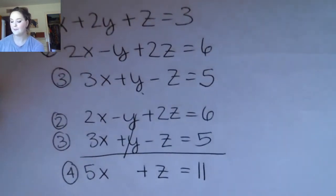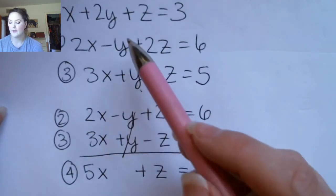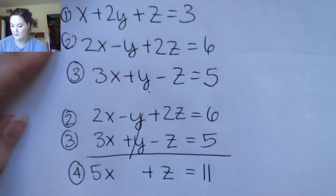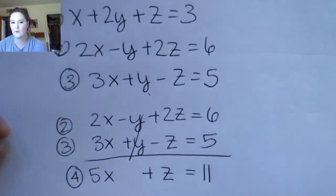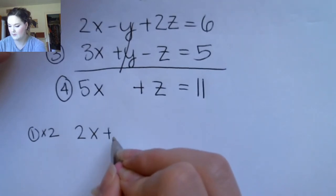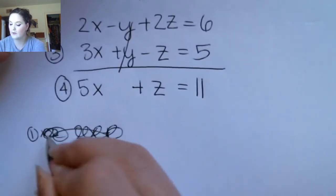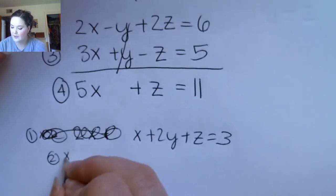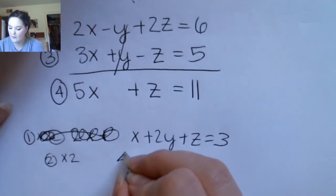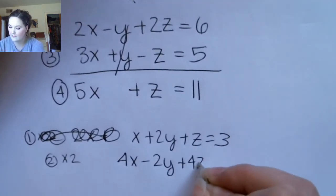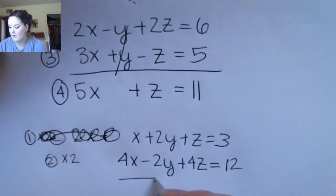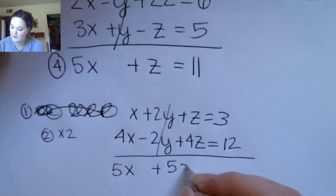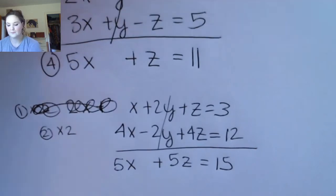Now I want to eliminate y from another equation. Maybe I'll just pick equations 1 and 2. I'm going to leave equation 1 alone: x plus 2y plus z equals 3, and multiply the second equation by 2, giving 4x minus 2y plus 4z equals 12. Adding these together: 5x — those cancel — plus 5z equals 15. This is equation 5.